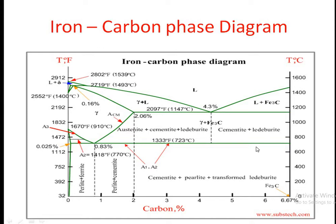The basic lines are A1 and A2 at 723 degrees Celsius, then the A3 line at 0.83 percent carbon, and then the Acm line connecting 0.83 to 2.06 percent carbon.